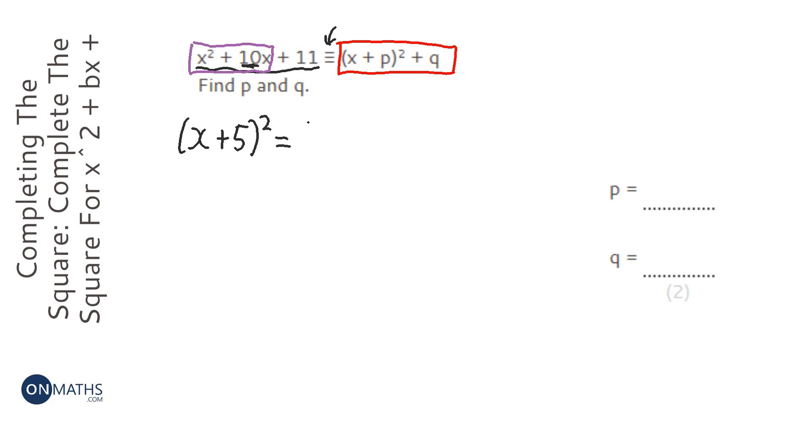Now, the problem with that is if I expanded that, so x plus 5, x plus 5, and I use FOIL or anything else to expand it, I'll get x squared plus 5x plus 5x, so plus 10x, that's great, that's what we want, but then it has plus 25.